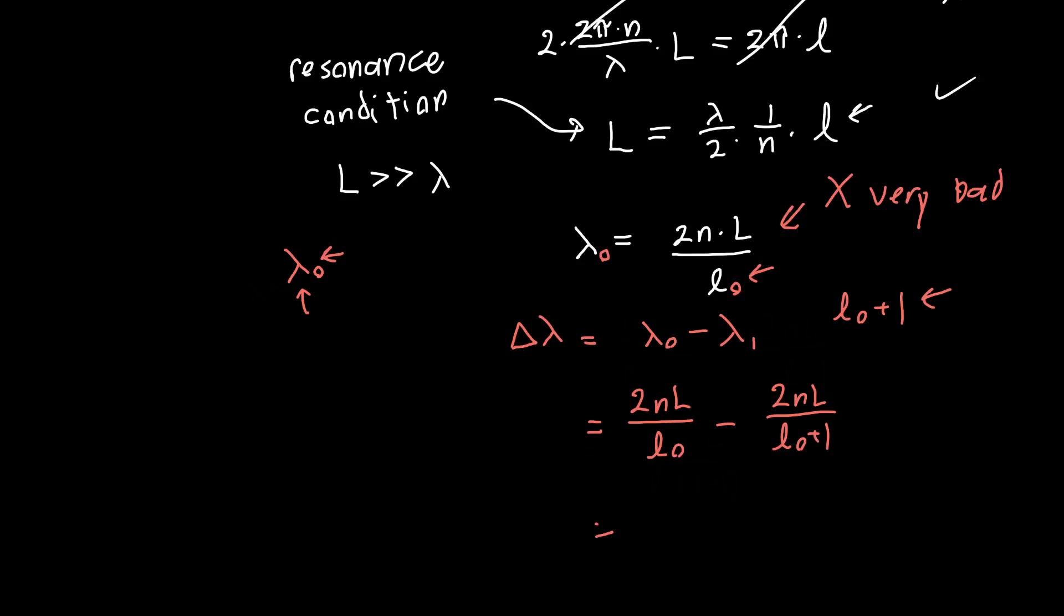And you can multiply and divide each fraction so that you can combine them together. And you'll get 2nl divided by l naught times l naught plus 1. Now, typically, l naught is large, so it's much, much greater than 1. So we can actually approximate this bottom part as l naught squared.